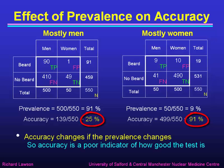This demonstrates that accuracy changes if the prevalence changes, so accuracy is actually a rather poor indicator of how good the test is. It's easy to get an accurate test if you have a population where not many patients have the disease — if the group is all women, the beard test will always appear accurate. So the accuracy changes with the prevalence of the disease.